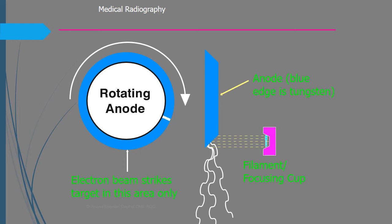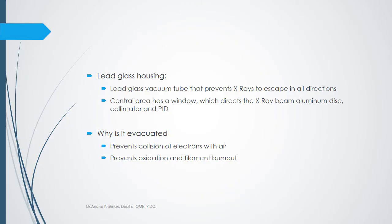When the electron beam strikes the target, the disc rotates halfway, cools down, and returns cold for the next exposure. The lead glass vacuum tube prevents x-rays from escaping in all directions; the central area has a window that directs the x-ray beam. The tube is evacuated to prevent collision of electrons with air molecules — we want electrons to interact with atoms in the anode, not with anything else.